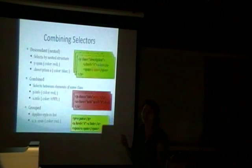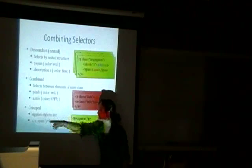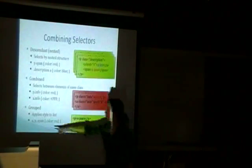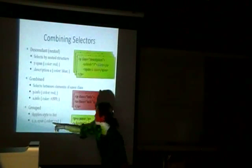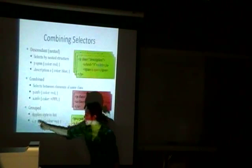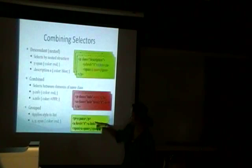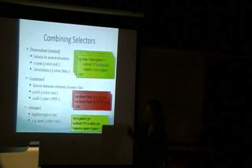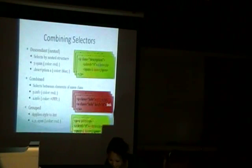The last selector type we'll cover is the grouped selector, which applies a style to everything in a list. So if you say 'a, p, span { color: red; }', you're telling the browser to make all of those elements red. In the example, all three things would be red.